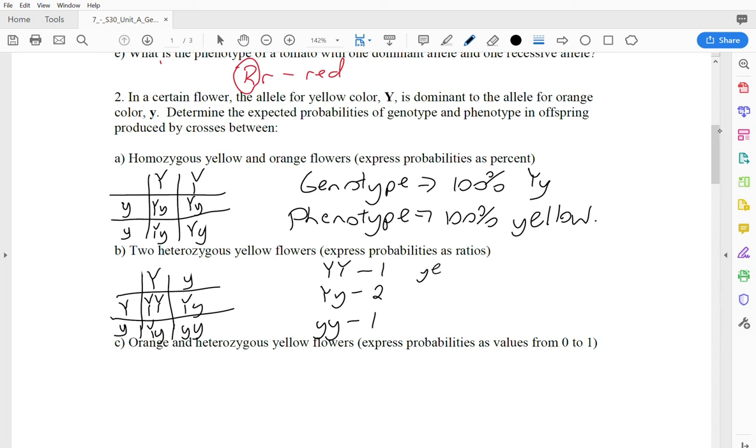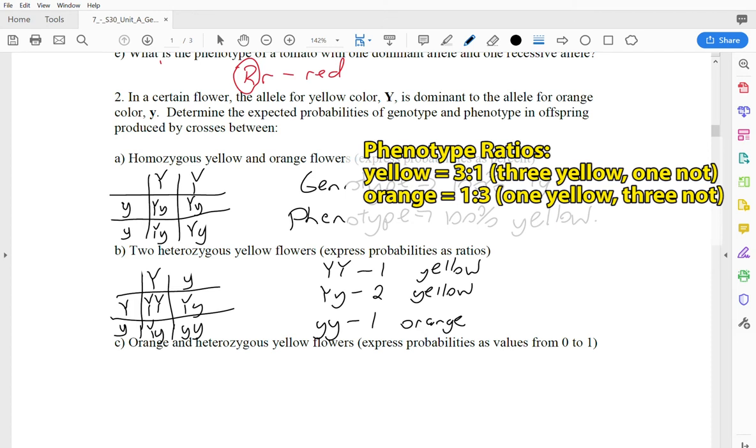Now for the ratios. For one out of four, that was lowercase lowercase. Now let's take a look at the phenotype ratios. So these are going to be the ratios of the different colors we're going to see. I need to work out what colors I have. So I'm going to have capital Y, capital Y. That works out to be yellow. Two dominants together. Capital lowercase. That's also a dominant there. So that's yellow. And the two lowercase Y's are going to be our oranges. So we have three yellows compared to one orange. You can write that as three to one if you're talking about the yellows, or one to three if you're talking about the orange.